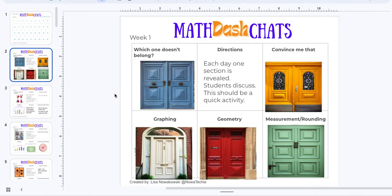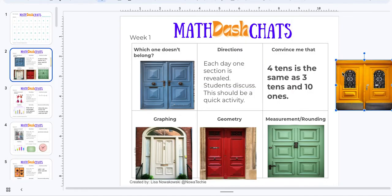So the student or the teacher chooses a door. Let's say you choose the yellow door. So the teacher would then move it aside. So the students haven't seen any of these yet. The convince me that is four tens is the same as three tens and ten ones. Well, this is a fantastic talking activity.